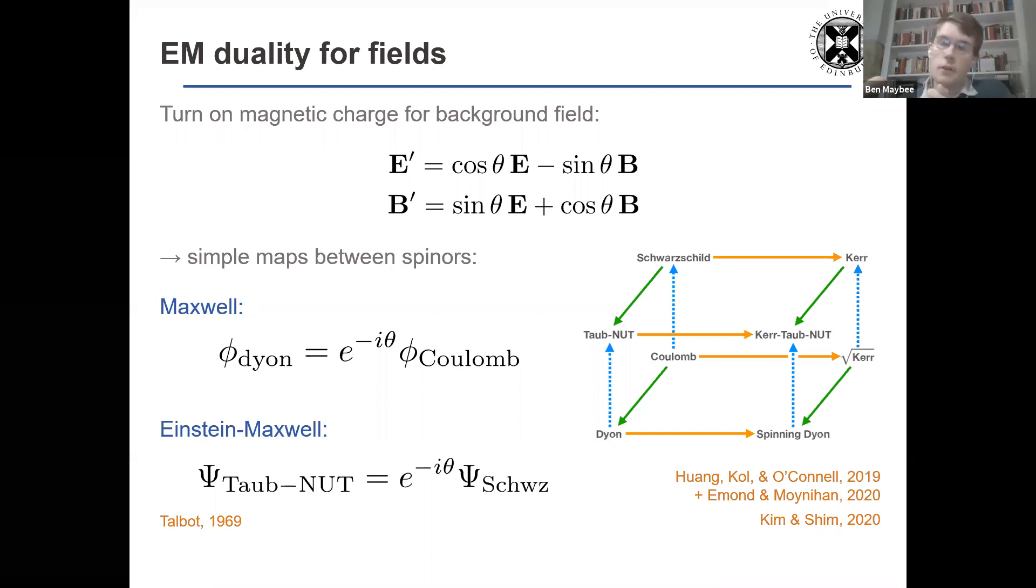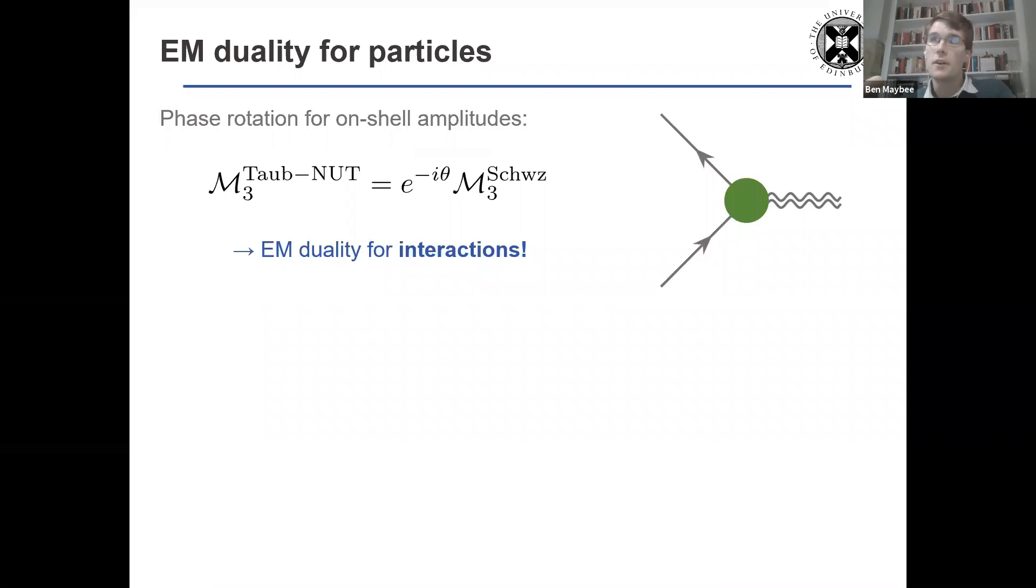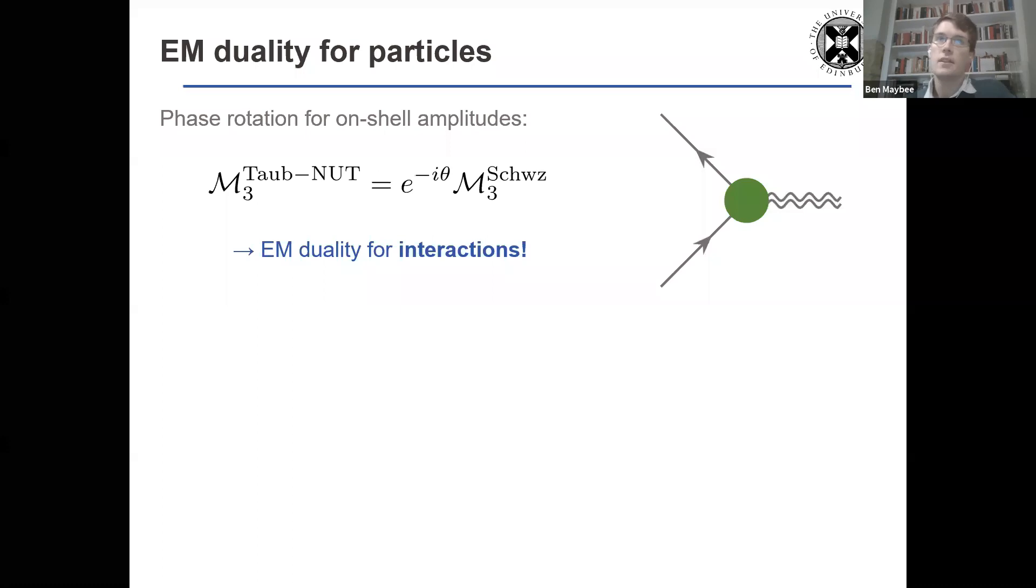So that's for the background, electromagnetic duality rotating between the backgrounds. But as we argued, or Donal argued for the Newman-Janis shift, if it happens for, this rotation happens very simply for an amplitude, it should also happen for the interactions as well. So when you've rotated the field, you've also rotated the charges, because they're linked by the equations of motion. So we also get a phase rotation on the amplitude.